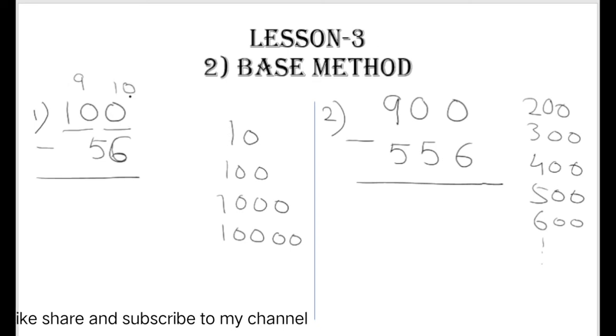So first we have to find out the 10th complement of 6. What is the 10th complement of 6? It is 4. Now in the last, we have to subtract 1 from the last number. So 1 minus 1 is 0.